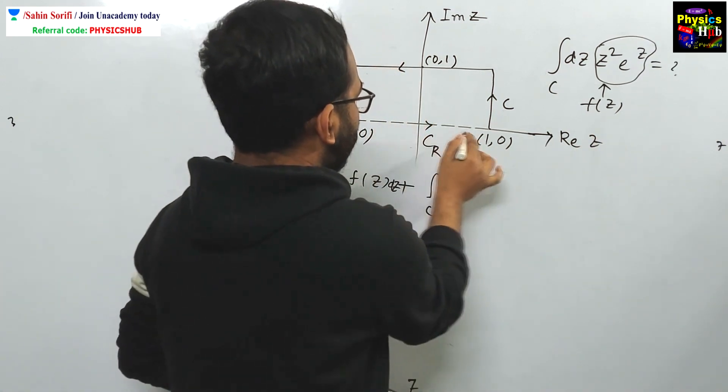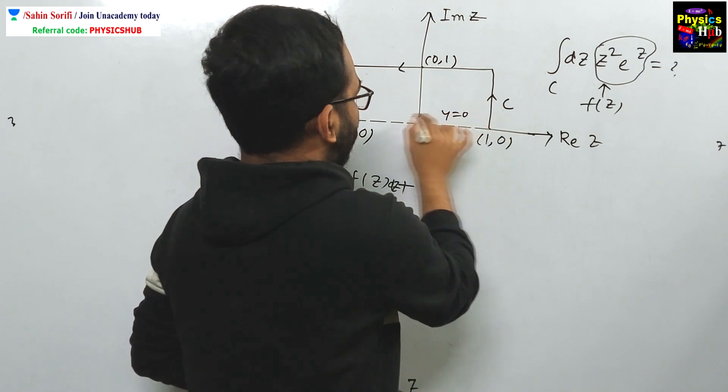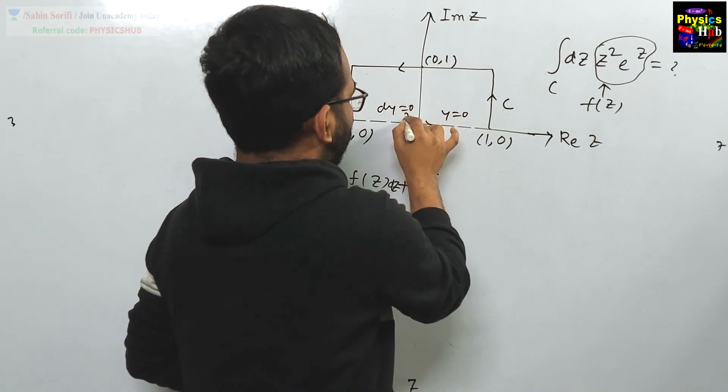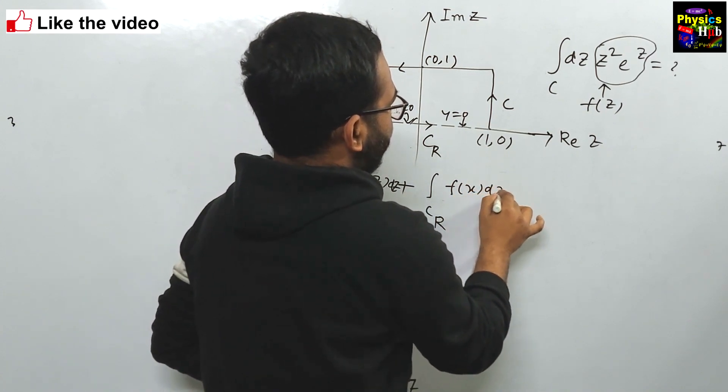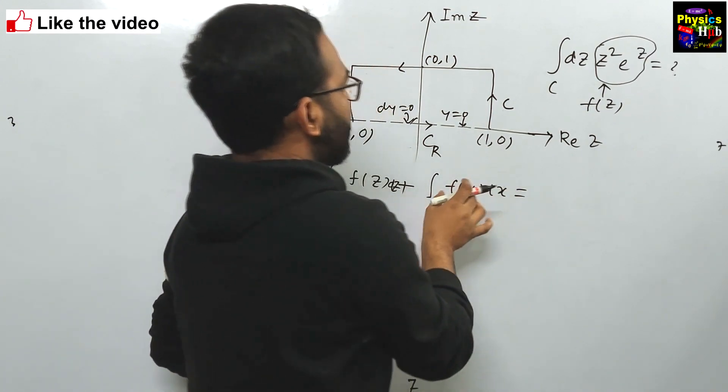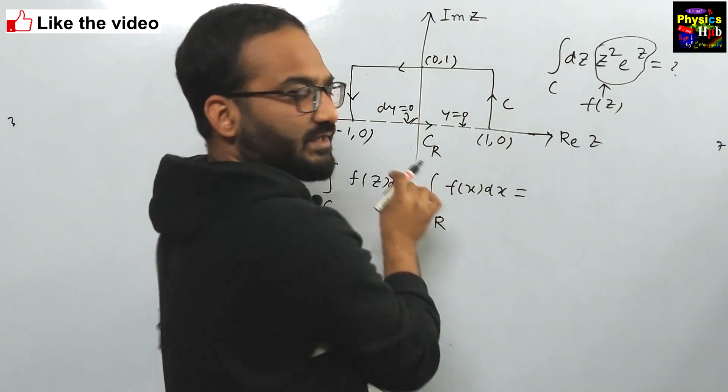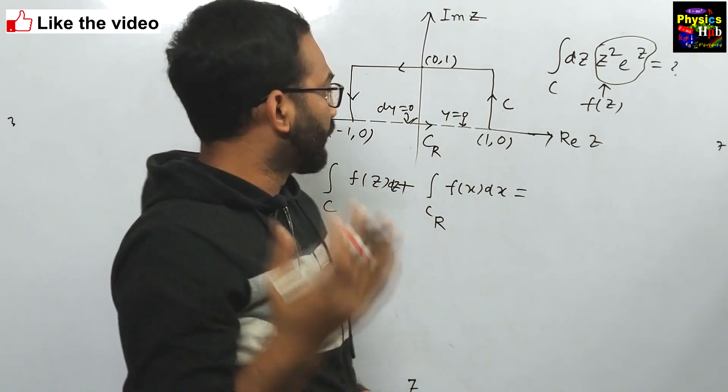Along the real axis, z equals to x because along this axis your y is equal to 0 and dy is equal to 0 also. We will have f of x dx.